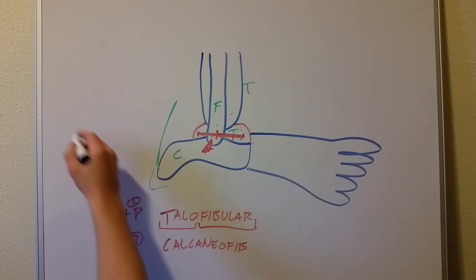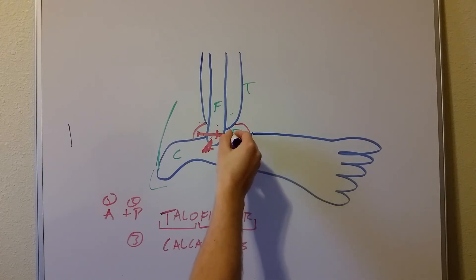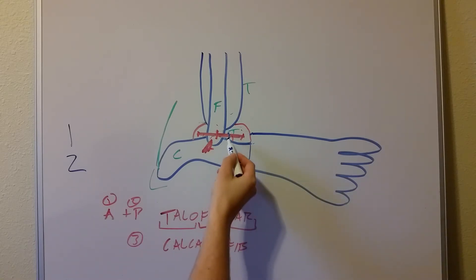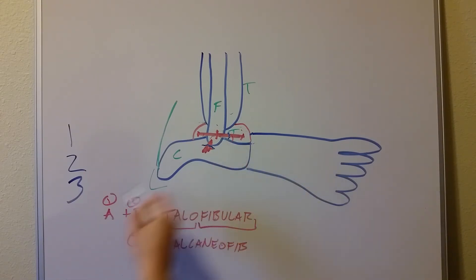So if you have a grade one ankle sprain, the ligament that's injured is just the front one. If you have a grade two, there's going to be two ligaments affected, and it's going to be the anterior and the middle one. And if you have a grade three ankle sprain, that's going to affect three different ligaments: the anterior, the middle, and the posterior. So we always start with an anterior one.